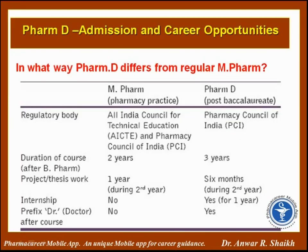In what way does PharmD differ from regular M-Pharm? The regulatory body for M-Pharm is AICTE, whereas for PharmD it is PCI — Pharmacy Council of India. M-Pharm is of 2 years duration, whereas PharmD Post Baccalaureate is 3 years, and after 10+2 it is 6 years. The project thesis during the second year of M-Pharm is 1 year, but for PharmD it is 6 months during the second year. There is no internship for M-Pharm, but a 1-year internship is compulsory for PharmD. The prefix 'Doctor' is not added for M-Pharm holders, whereas the prefix 'Doctor' is added for PharmD holders.